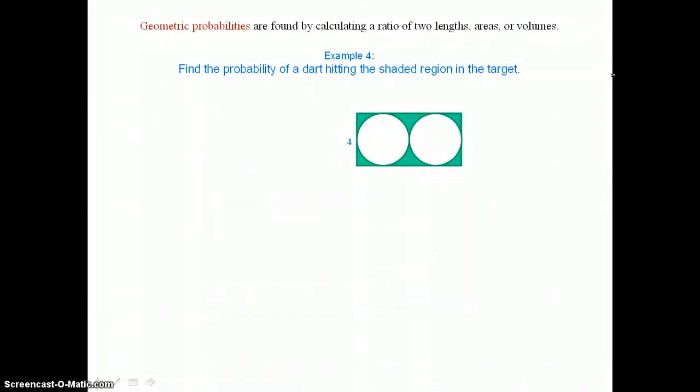Geometric probabilities are found by calculating a ratio of two lengths, areas, or volumes. In example 4, we want to find the probability of a dart hitting the shaded region in the target. So to determine that shaded region which is our successes in the top of our probability, we can first find the area of the entire rectangle. And since the diameter of this circle is the same as the width of the rectangle, we know that the length of this rectangle is twice that diameter, or that rectangle is going to have a length of 8.